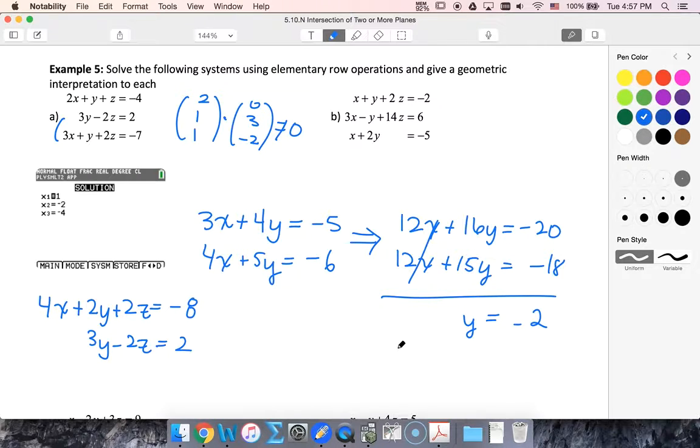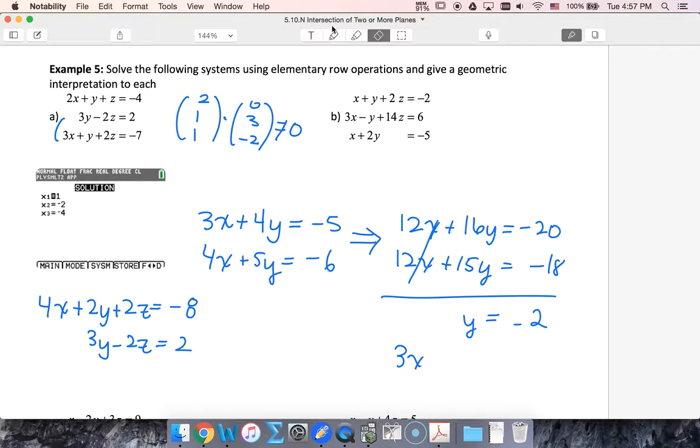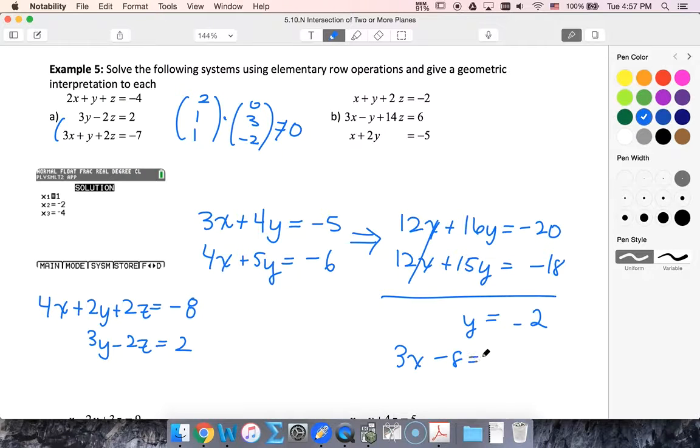3x plus negative 8. So 3x minus 8 is negative 5. That means that 3x is going to equal 3. So x is 1.